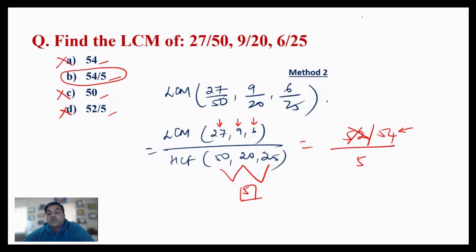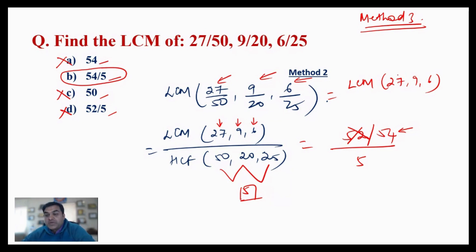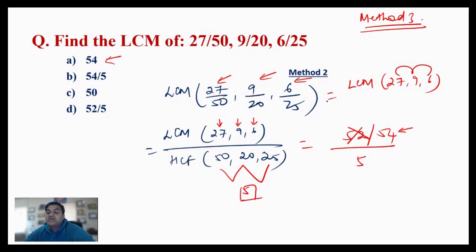Method 3: Apply mathematical reasoning directly to the options. The LCM of 27/50, 9/20, and 6/25 must have a numerator that is a multiple of 27, 9, and 6. Checking the options: 54 is a multiple of 27, 9, and 6 — so it could be the answer. 54/5 also qualifies. However, 50 is not a multiple of 27, 9, and 6, and 52 is not either, so those two options are eliminated.